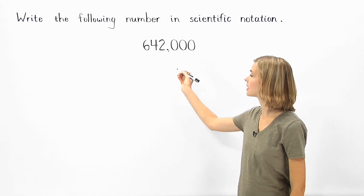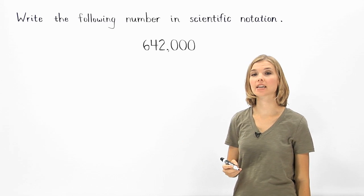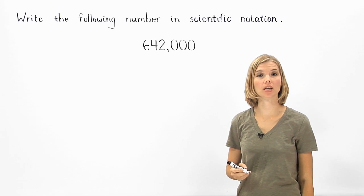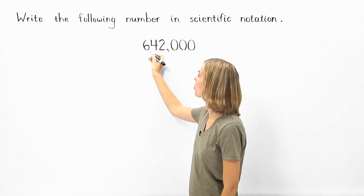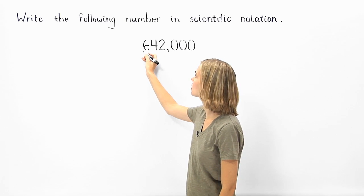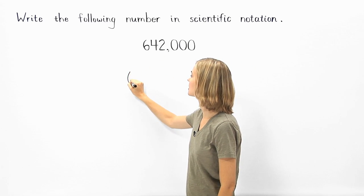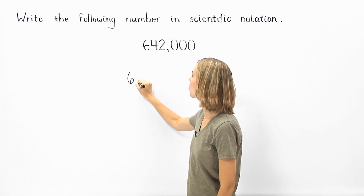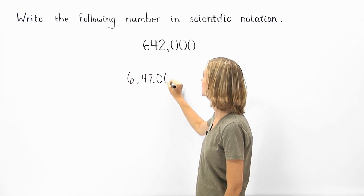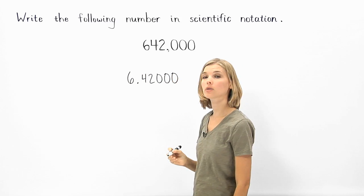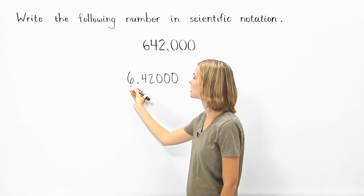To write a number such as 642,000 in scientific notation, first write a decimal point in the number so that there's only one digit to the left of the decimal point. So here we have 6.4200. Notice that there's now only one digit to the left of the decimal point.